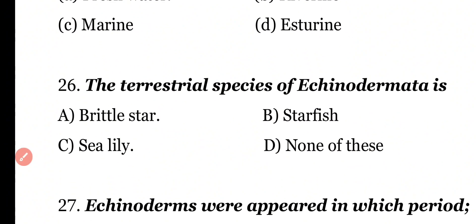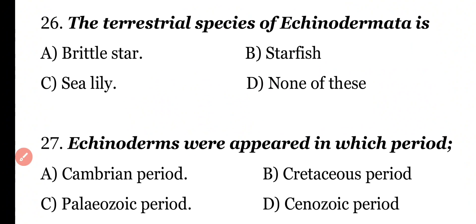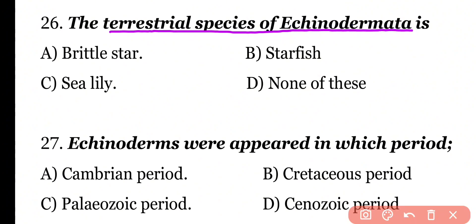Question 26: Terrestrial species of Echinodermata is brittle star, starfish, sea lily, or none of these? Correct answer is Option D. Because Echinoderms are exclusively marine animals and no species are present in a terrestrial environment.